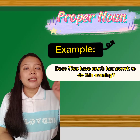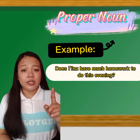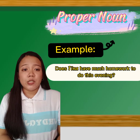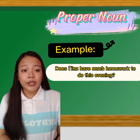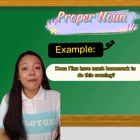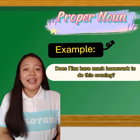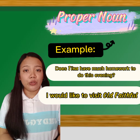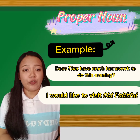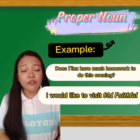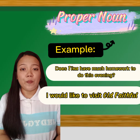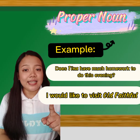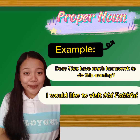For example, does Tina have much homework to do this evening? Tina is the name of a specific person. Therefore, it is a proper noun. Another example: I would like to visit Old Faithful. Old Faithful is the specific name of a geological phenomenon. Thus, this is a proper noun.